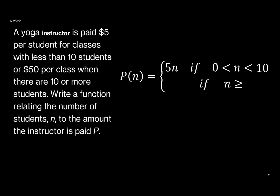Then when there are more than 10 students, the instructor gets a flat fee of $50. So the second part of our piecewise function is 50. There is no n.